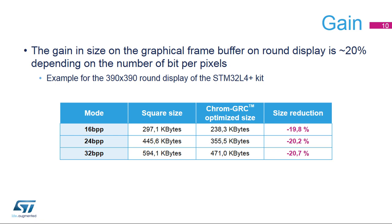Thanks to the smart mapping of visible pixels in the memory, the CHROM GRC reduces RAM usage significantly for the graphical frame buffer. For a round display, the gain is above 20%. There may be slight variation depending on the frame buffer color mode.